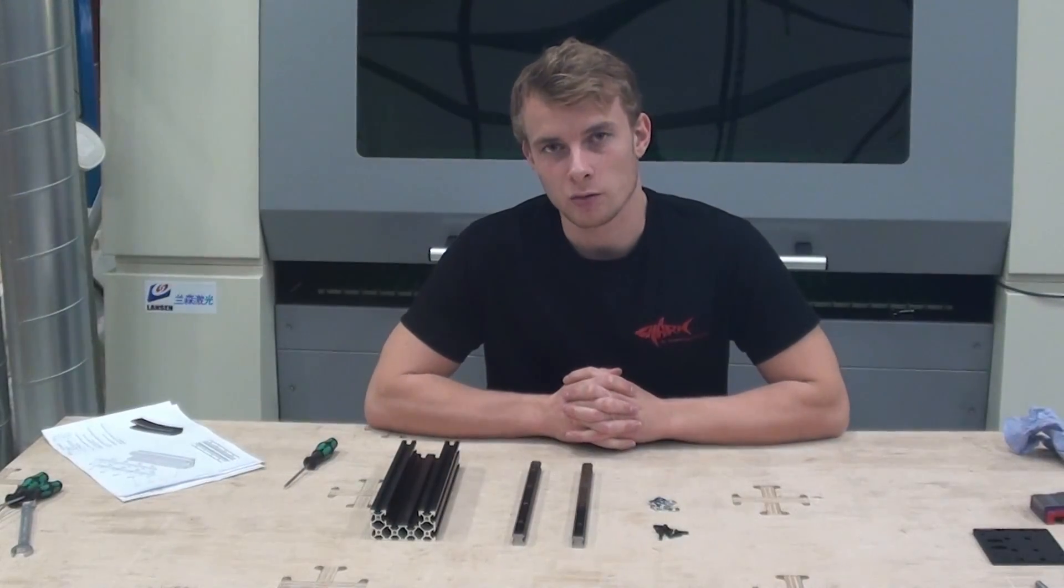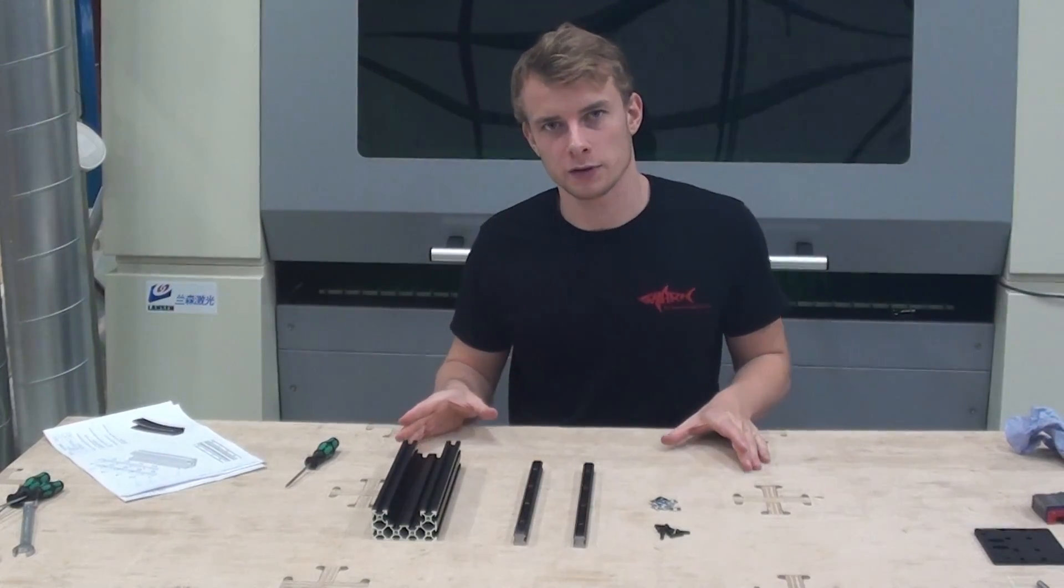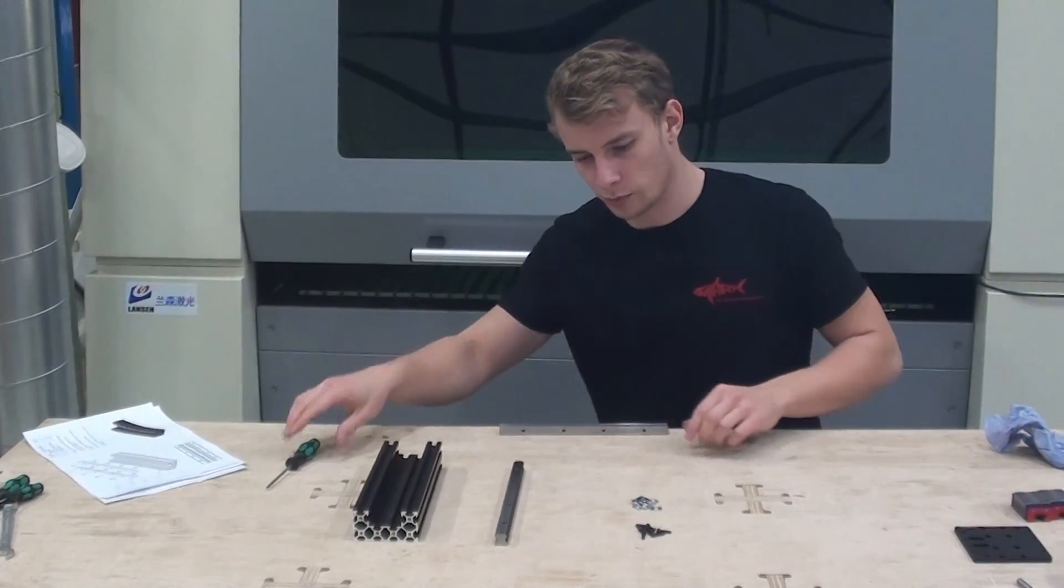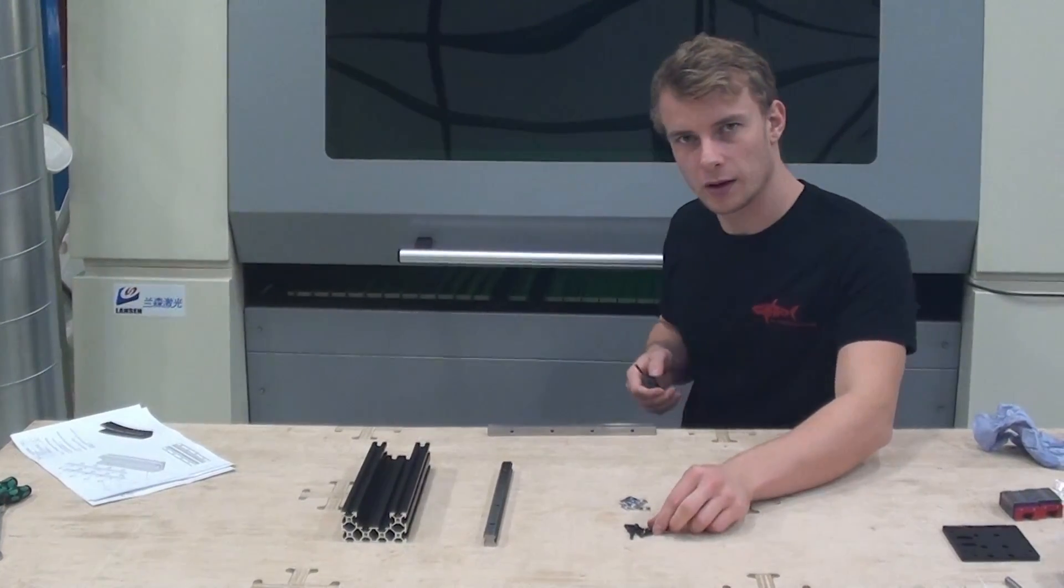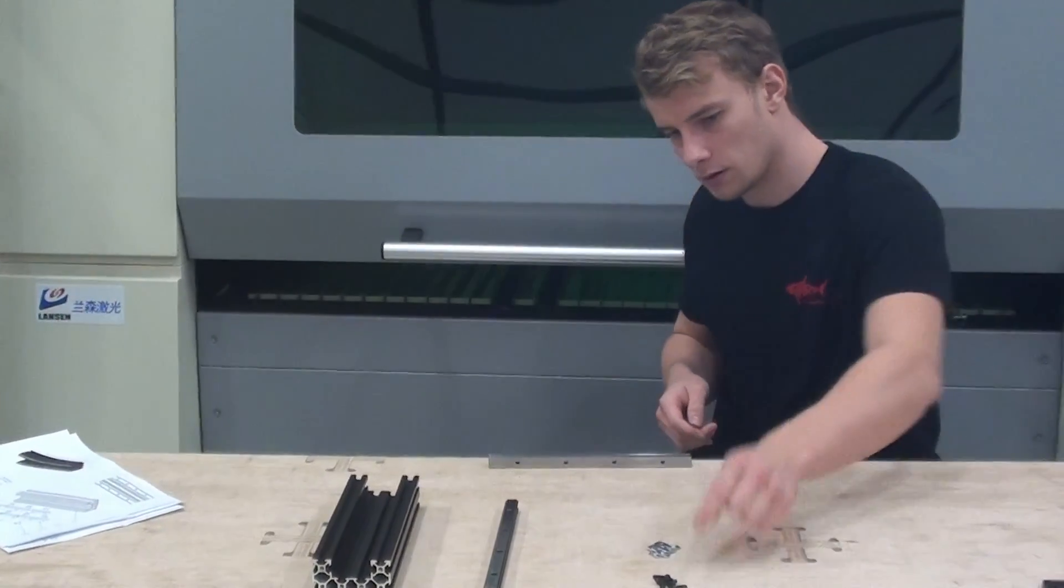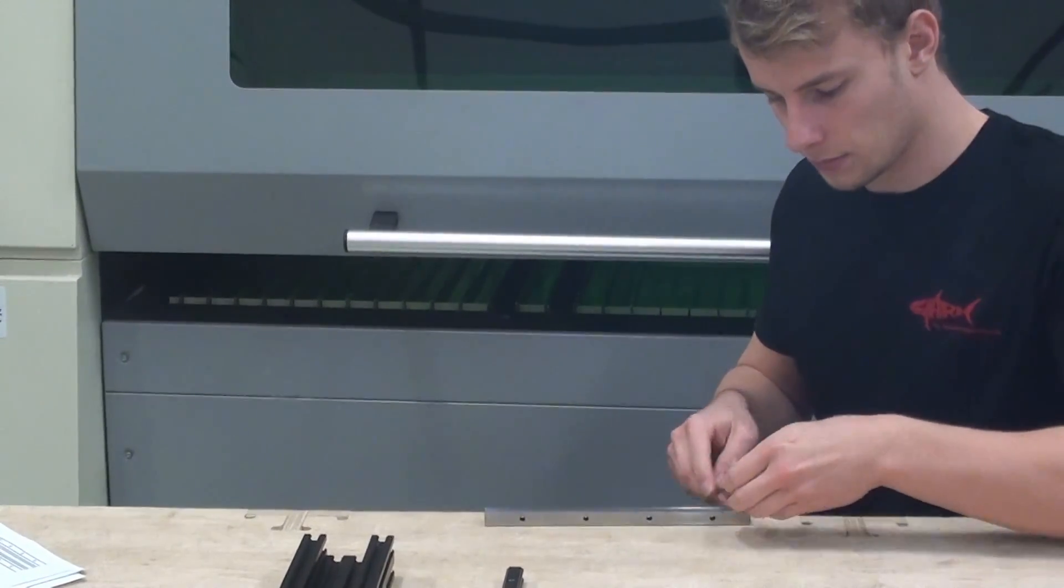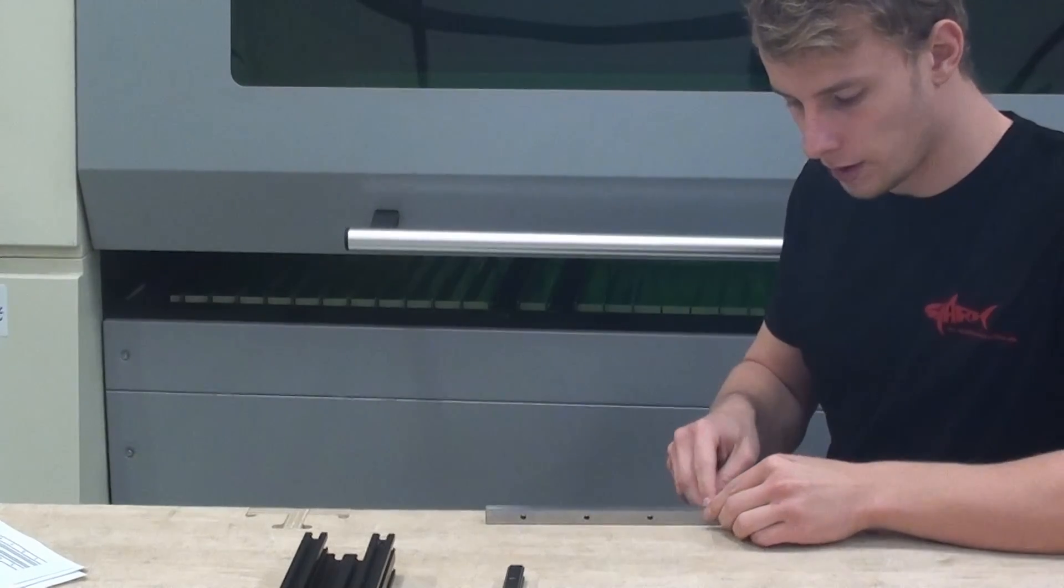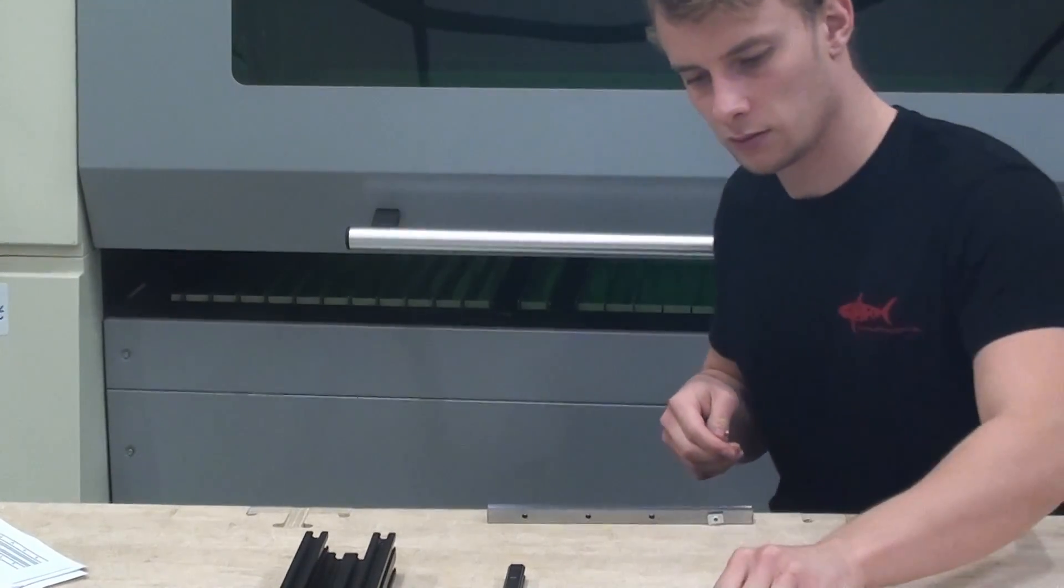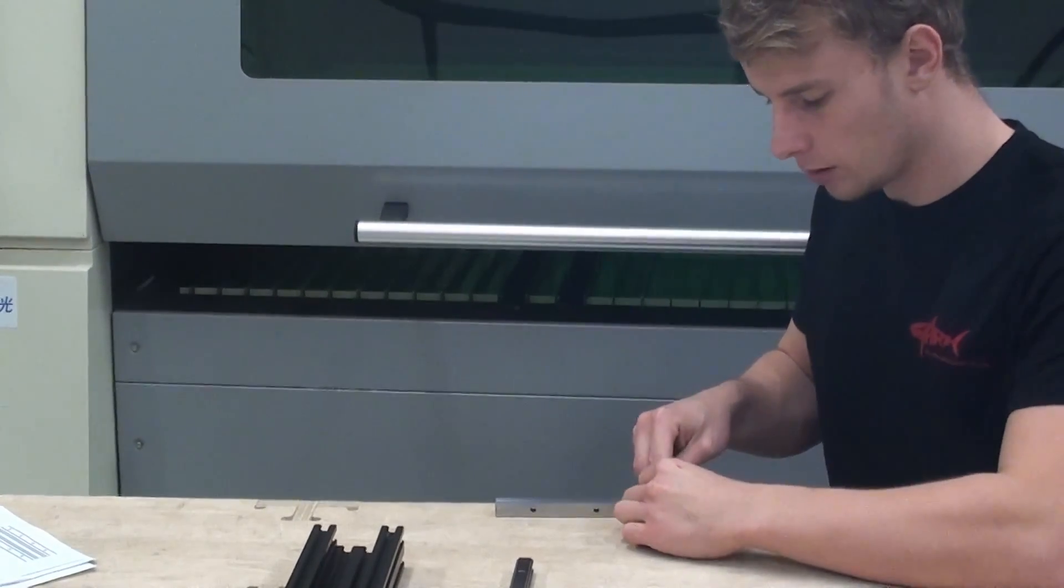So we will start out by doing the first part of the manual. I have put all the components I need for this step in front of me and now I will start preparing the linear guides. What I like to do when preparing these is put them on the edge of the table like this and grab the screws and the T-nuts, insert the screw like this and then thread it once or twice onto the T-nut. It will make it easier to slide it onto the C-beam later.